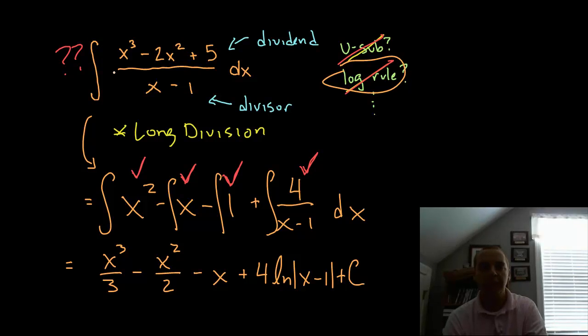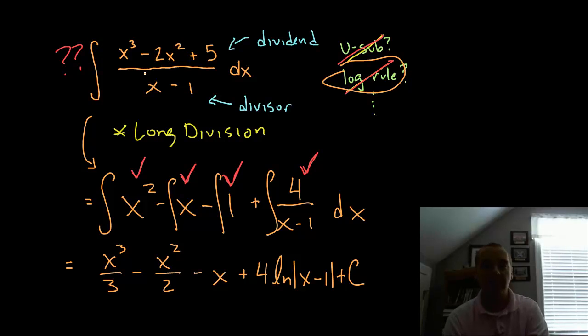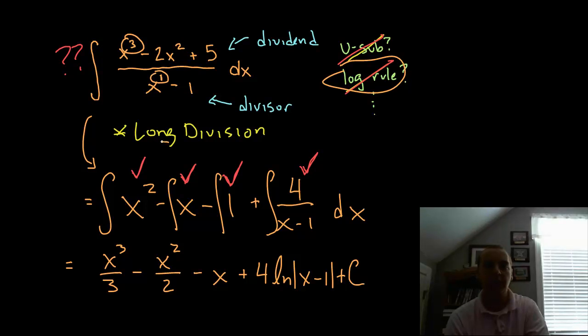I hope that helps you understand how to integrate expressions like this. They stick out like a sore thumb on homework and test problems: whenever the numerator's degree is larger than the denominator's degree and you have two polynomials, you'll need long division.